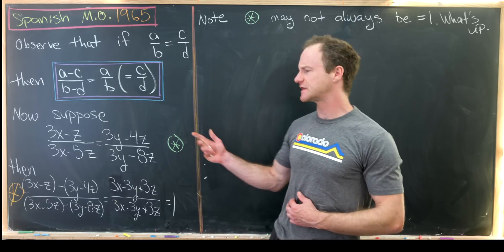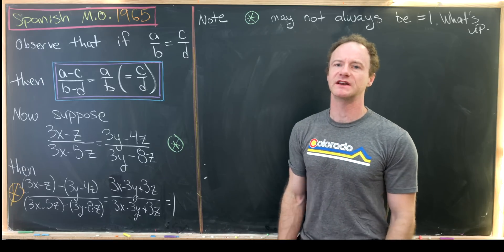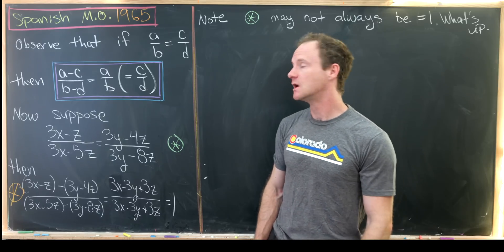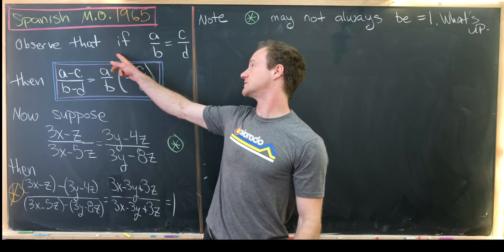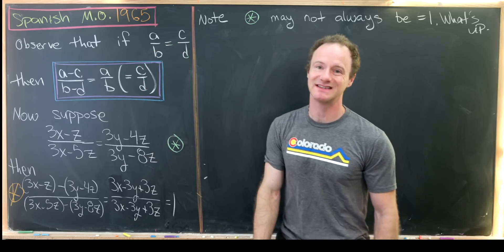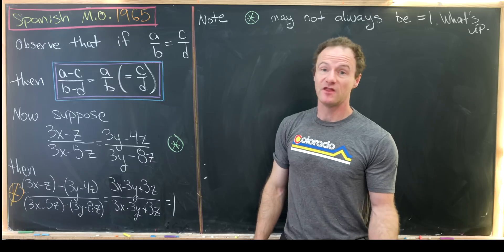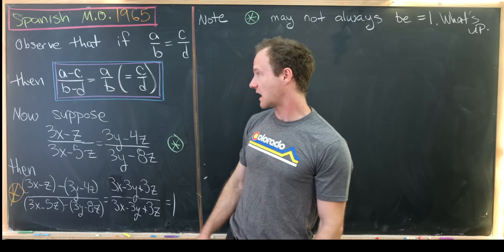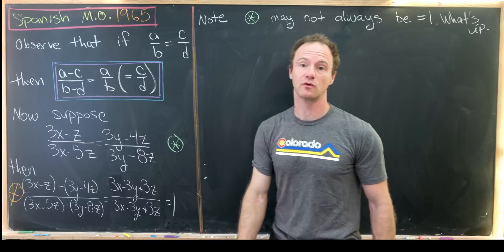So let's look at the problem and we'll make a little bit of a discussion of how this kind of problem is quite different than the ones that we see now. Let's observe that if we've got a fraction A over B is the same thing as a fraction C over D, then the difference of the numerators divided by the difference of the denominators is equal to the original fraction.